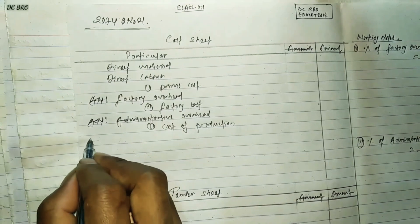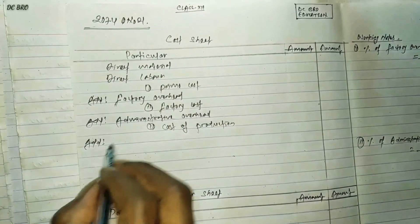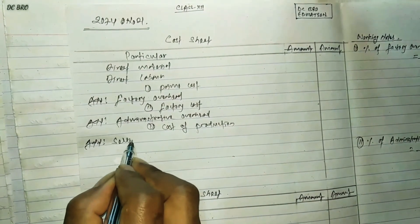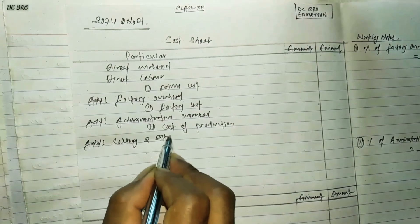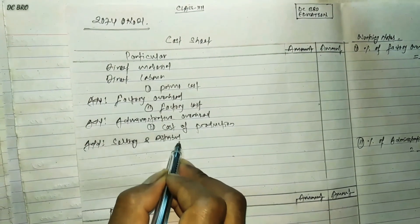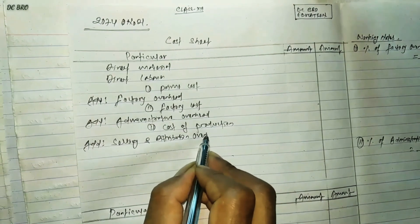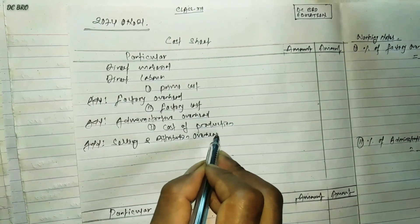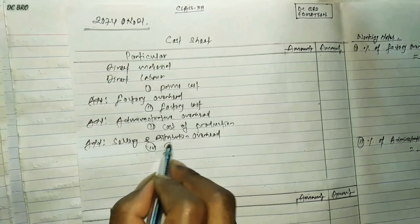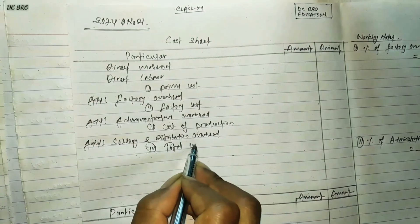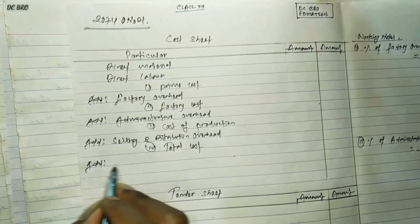Add selling and distribution overhead to get total cost.